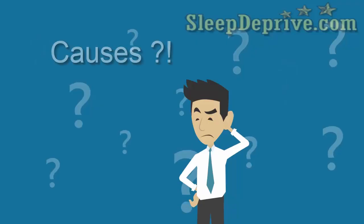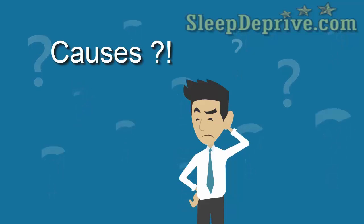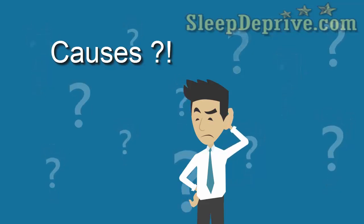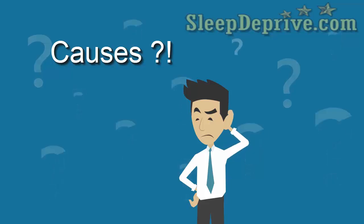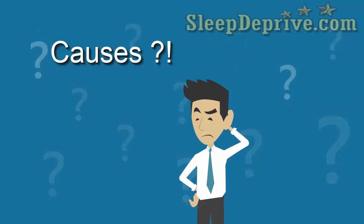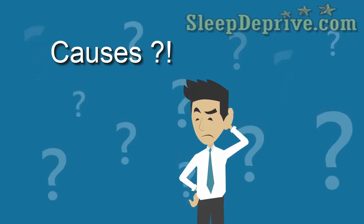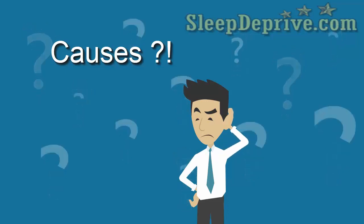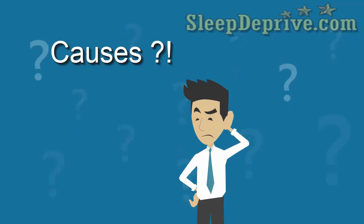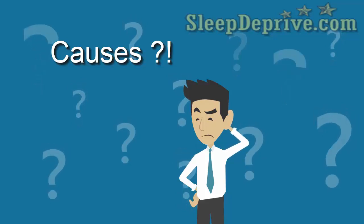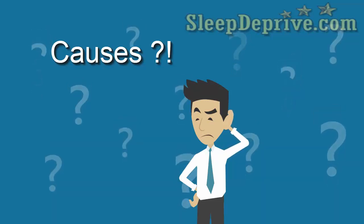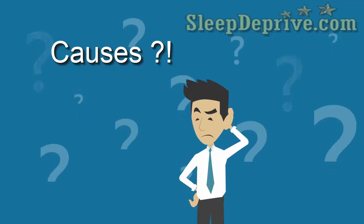So what could be the possible causes of sleep apnea? Obstructive sleep apnea occurs when the muscles in the back of the throat relax. These muscles support the soft palate, the triangular piece of tissue hanging from the soft palate, the tonsils, the side walls of the throat, and the tongue. When these muscles relax, the airway narrows or closes as the person breathes in. Due to this, he can't get enough air, which can lower the oxygen level in the blood.